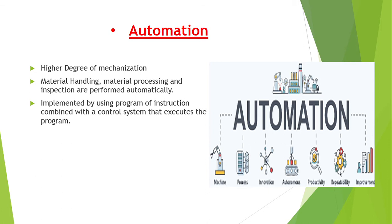As we see in today's world, for any industry to survive in the competitive market, it must go for automation. It is implemented by using a program of instructions combined with a control system that executes the program. Automation means a closed loop system in which there is provision of feedback.